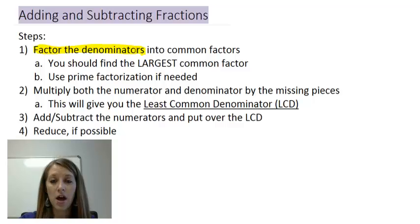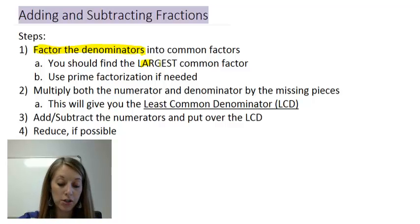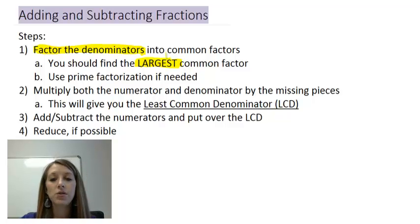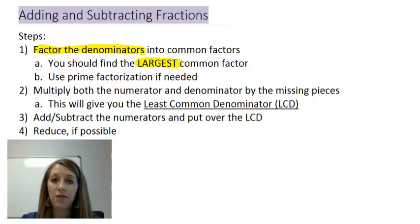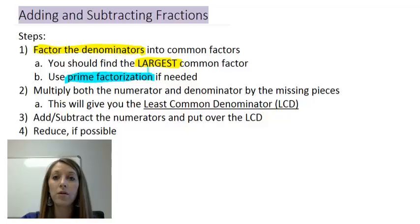When you factor the denominators, you want to make sure to pick out the largest common factor. If you don't pick out the largest common factor, you're actually doing more work in the long run. If you can't identify the largest common factor at first glance, you may need to factor your denominators all the way down to prime factorization and pick out all the prime factors they have in common.